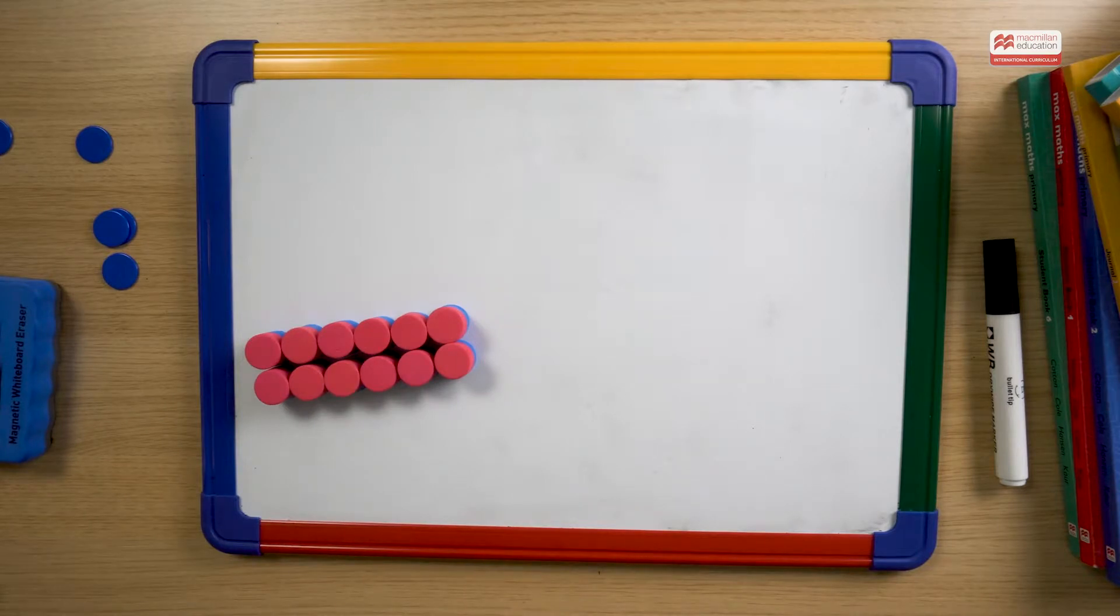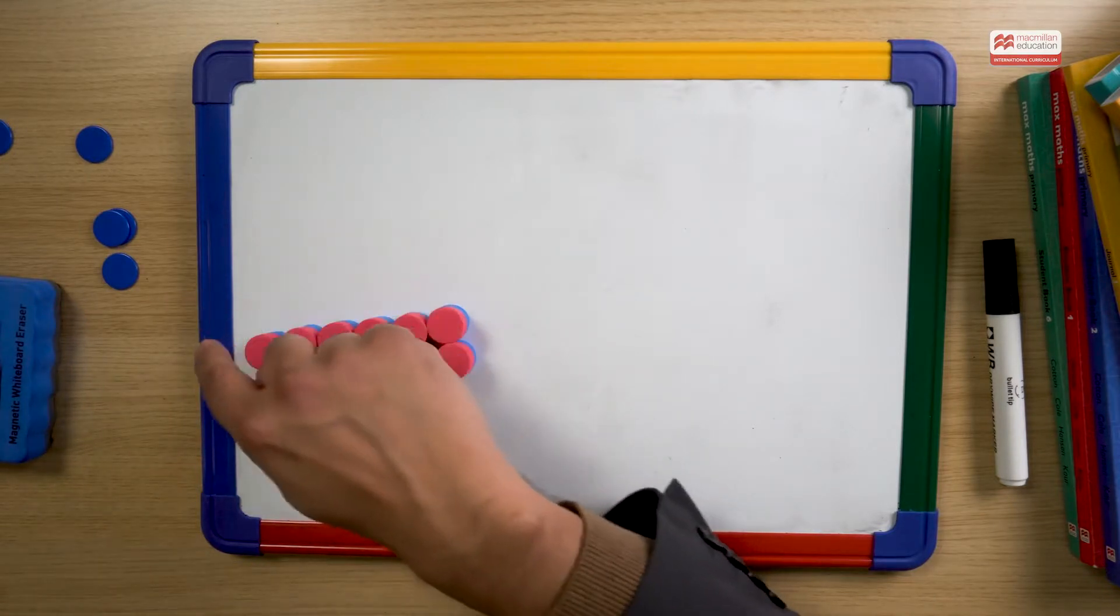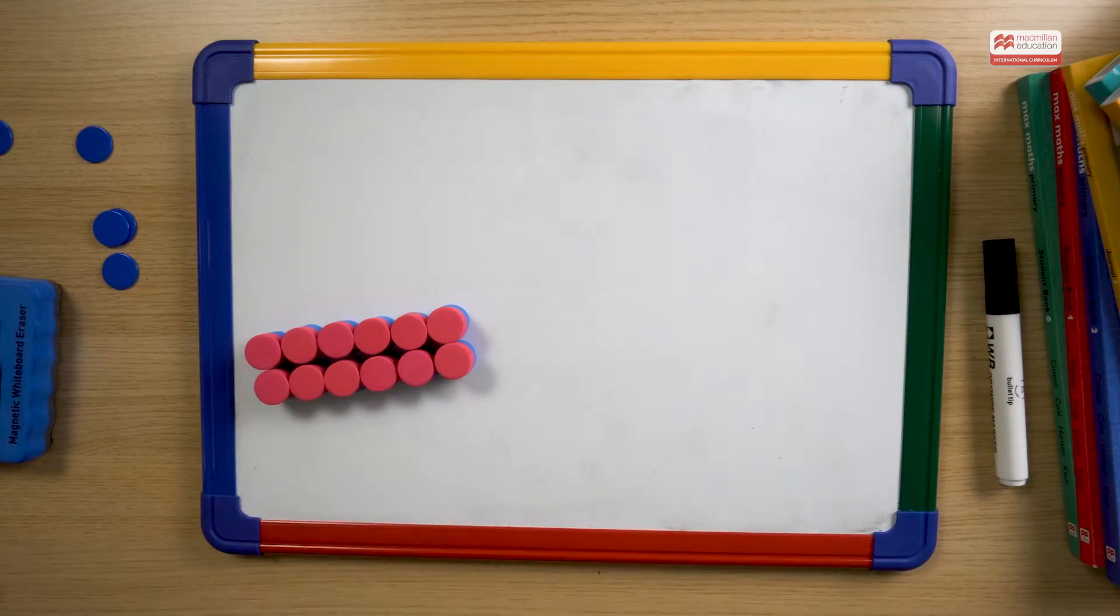So we have all the factors. A lot of the times we tell our pupils factors come in pairs. So we can see the pair here, 6 and 2. And so using rectangles and counters to make rectangles for different numbers shows a clear and visual way of seeing factors and you can see why they come in pairs too.